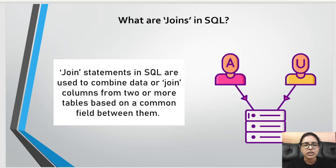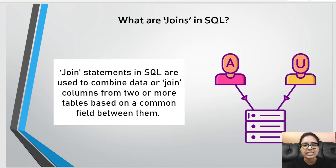Starting off, we have a brief introduction of join statements. Join statements in SQL are used to combine data or join columns from two or more given tables on the basis of a common field between them. Suppose you have two or more different tables and you want a single table consisting of different columns — one column from one table, another column from another table, and so on. In that case, you could take help of join statements in SQL and obtain a single table with different columns from the different tables.